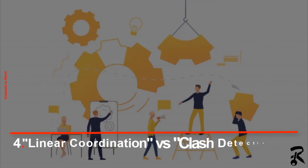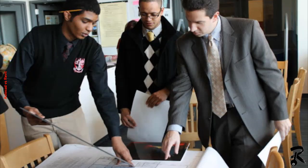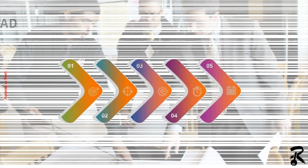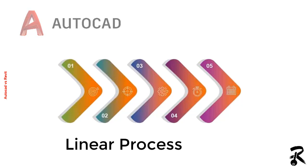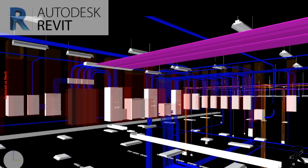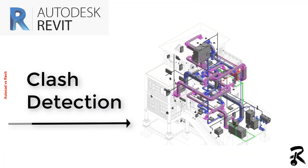Number four: linear coordination versus clash detection. This is where things get really interesting. Once the design is approved, in-depth coordination with other engineering trades must begin. In AutoCAD, this process is quite linear, involving constant back-and-forth between all parties. Revit provides a big advantage: the structural, mechanical, and electrical models can all be linked to the main architectural model to detect and track any clashes between elements in real time.